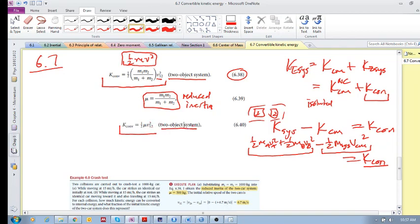Note: if there's a question on how to calculate the convertible energy, you can either use this if you've got the two inertias and the relative velocity, or you can calculate it from first principles - calculate the energy in the system and subtract the kinetic energy of the center of mass. In the next video we'll do 6.8 which will illustrate these ideas. Cheers.